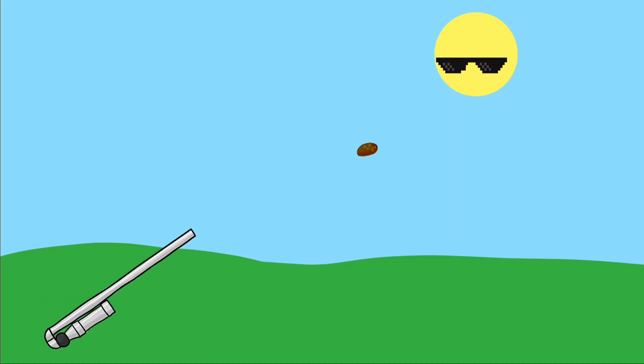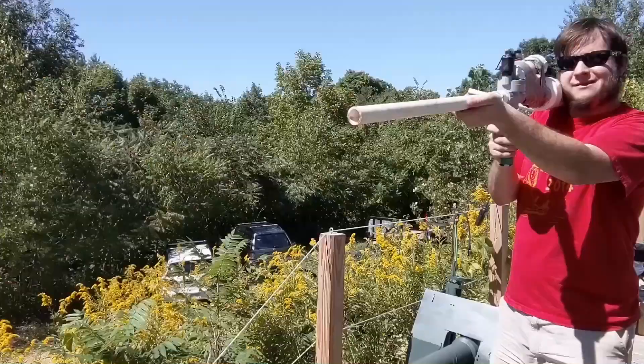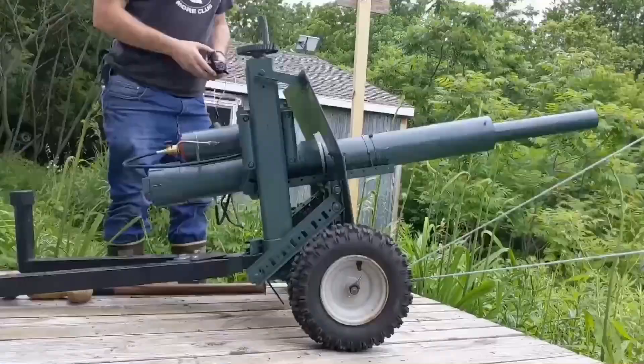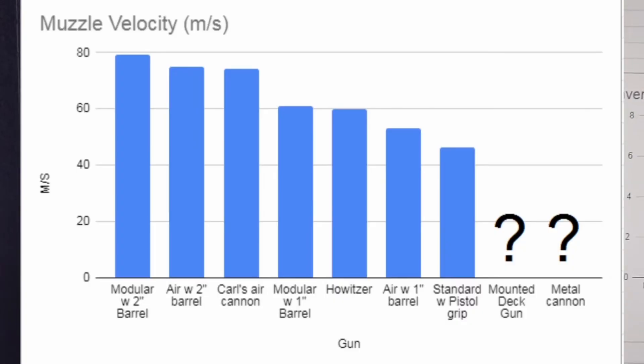With the long barrel, my potato gun shoots a potato about 250 yards or about 230 meters. But knowing that isn't enough. Take this video for example. In this video a couple friends compare a bunch of potato guns, and one of the measurements they take for each gun is the muzzle velocity in meters per second. If I want to compare my gun to the ones in this video, I also need my muzzle velocity.